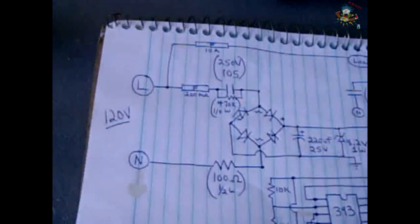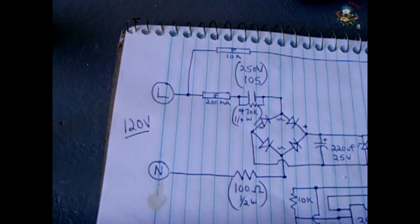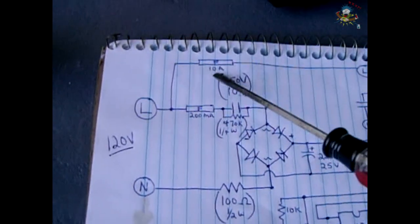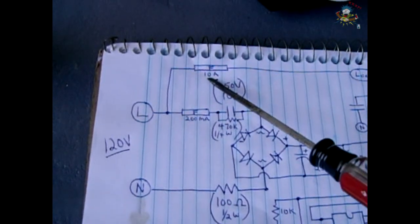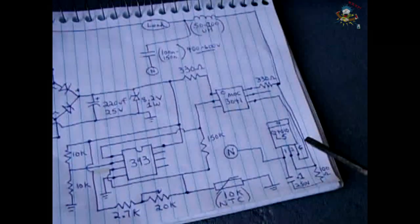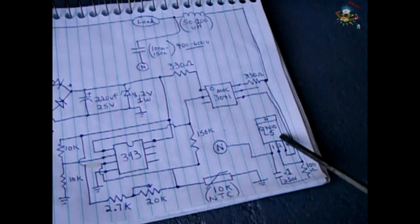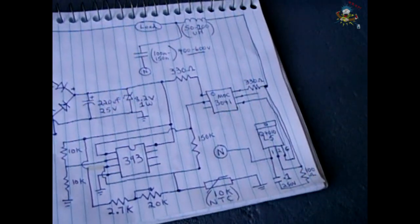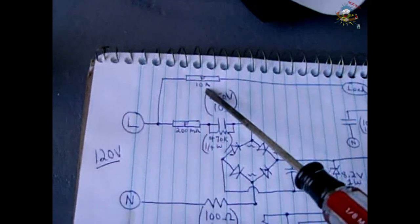Now we're going to go over the high side of the circuit that's going to be controlled with the load. The line goes through the 10 amp fuse. Make sure you size this according to your triac. I am using a Q4010L5, that's a 10 amp triac. If you're using a 4 amp like a BT136, then you would make sure you have a 4 amp fuse.